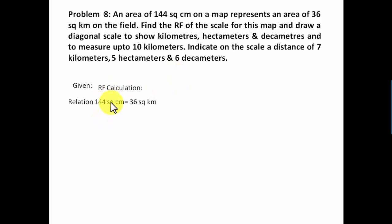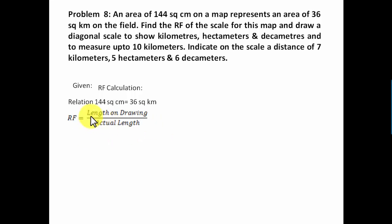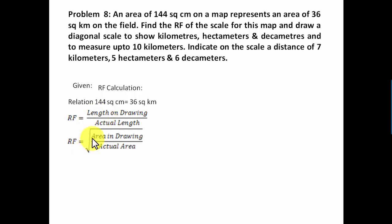We have this relationship: 144 square centimeters on the map (on drawing) is equal to 36 square kilometers in reality. We're going to use this relationship to get the RF — the representative fraction. The formula for RF is length on drawing upon actual length, but here we have areas, so we need to modify the formula to: under root of (area in drawing divided by actual area).